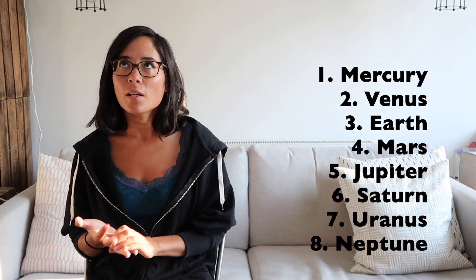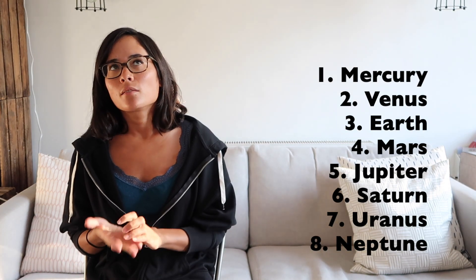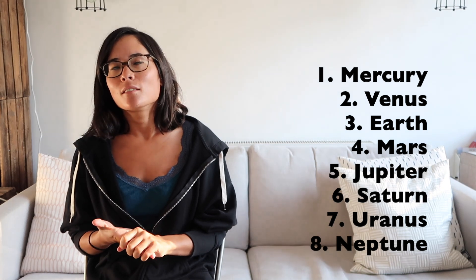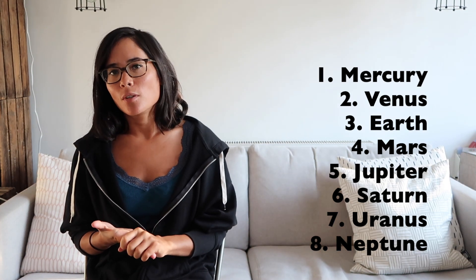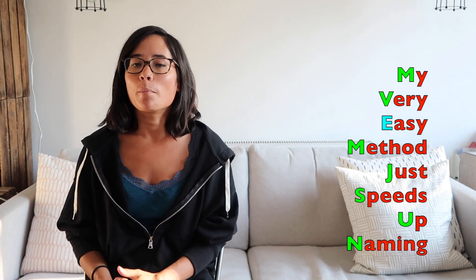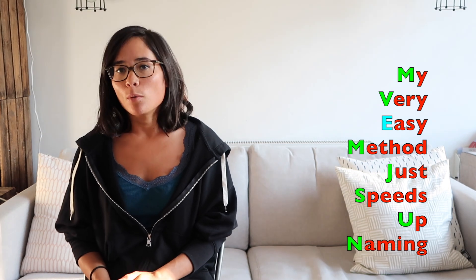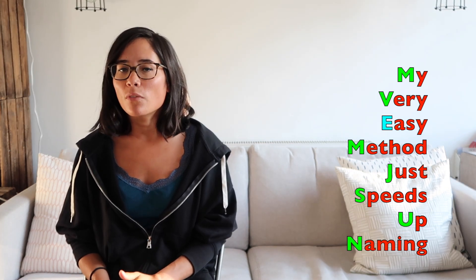The solar system contains all the planets you've heard of, and in order starting closest to the sun you have Mercury, Venus, Earth, Mars, Jupiter, Saturn, Uranus, and Neptune. Sometimes people count Pluto, but I don't think we're supposed to count it anymore because it is too small to be counted as a planet. The way I remember the order of the planets is a mnemonic — 'My Very Easy Method Just Speeds Up Naming' — which is a great way to help you remember the order.